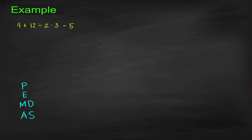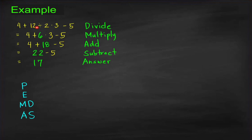We don't see any grouping symbols or exponents, so we only need to apply multiplication and division from left to right, then addition and subtraction from left to right. First we divide: 12 divided by 2 gives 6. Then multiply: 6 times 3 gives 18. Now we're left with addition and subtraction, performing from left to right: 4 plus 18 is 22, then 22 minus 5 equals 17. Therefore, 17 is the correct answer when we apply the correct order of operations.